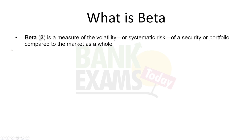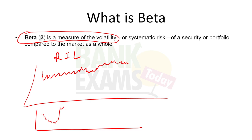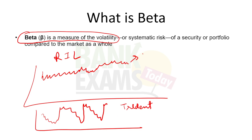First of all, what is Beta? Beta is a measure of volatility. For example, consider Reliance Industries ka stock price — it moves like this. And this one is Trident ka stock price. In layman's language, Reliance ka beta kam hai Trident se. Beta is a measure of volatility — more movement means more beta, less movement means less beta.